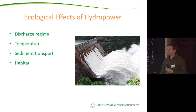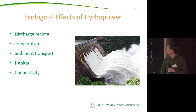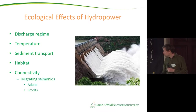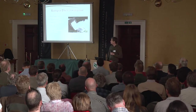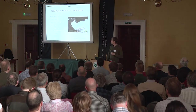Sediment transport and habitat are also affected, but probably most important for the topic we're here to discuss is how dams affect the connectivity of systems. Migrating species will obviously find a dam a little bit difficult to negotiate. Considerable work has been done trying to mitigate the effect on upstream migration of adults, but maybe less so on the downstream migration of smolts, even though that's just as important a part of the life cycle.